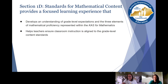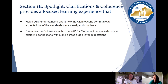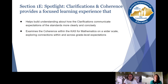It all goes back to something mentioned earlier: the better understanding that we have of this, the better teachers can ensure that classroom instruction is aligned to the grade-level content standards. Finally, Section 1E focuses on clarifications and coherence. The clarifications are designed to help build an understanding of how they communicate expectations more clearly and concisely — something the writers of the standards were tasked to do from the beginning. In terms of coherence, this section helps participants examine coherence within the CAS for mathematics on a wider scale, understanding connections within their grade level as well as across different grade levels to help build better student understanding.